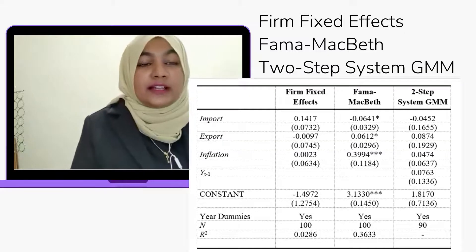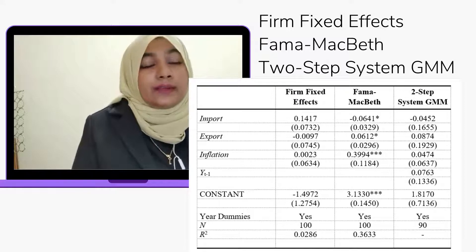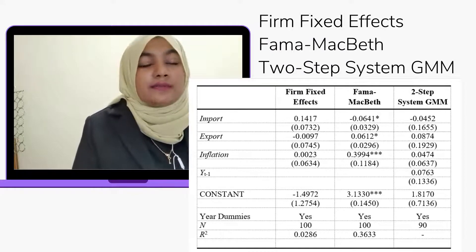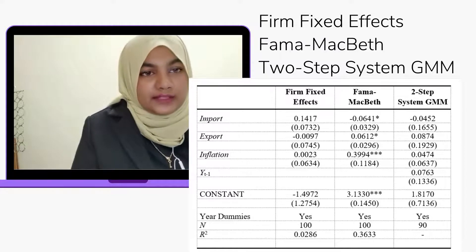Moving to Table 4, the last empirical result in this research. In this table, we can see three main methods: Firm Fixed Effects, Fama-MacBeth, and Two-Step System GMM.